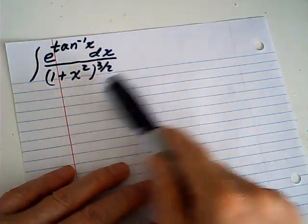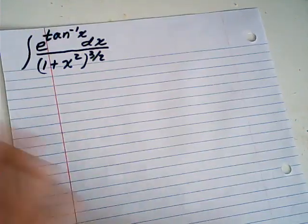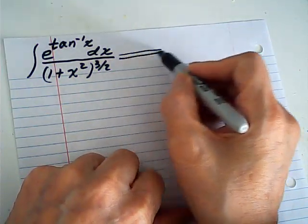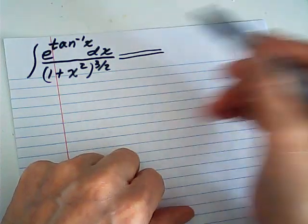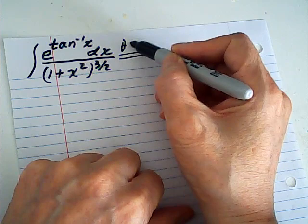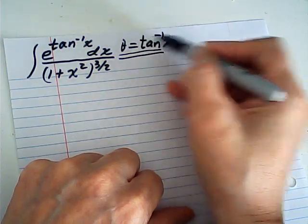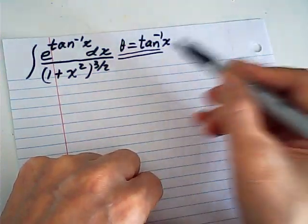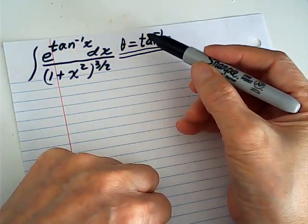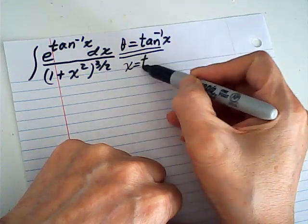Let me do this integral by two methods. Method one is substitution. Let theta be the arctangent of x — obviously to get rid of the inverse tangent. So x is equal to tangent theta.